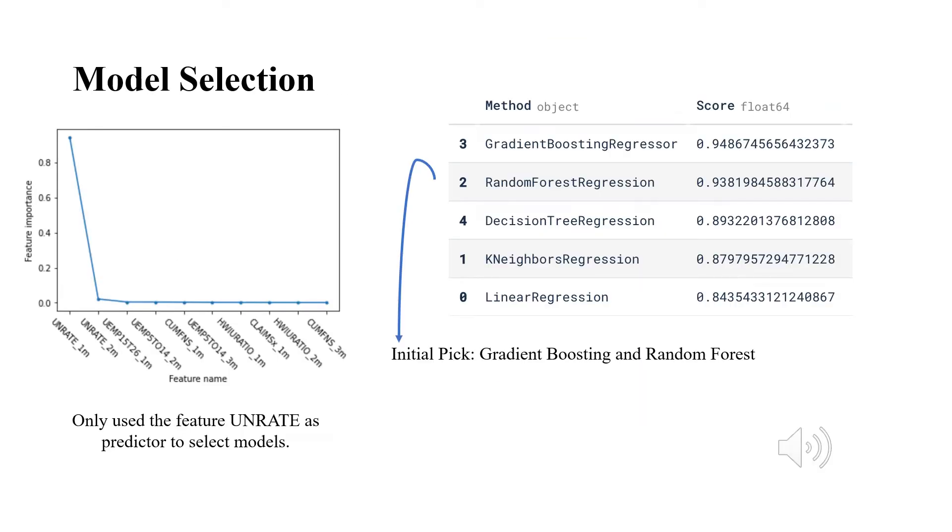Before I start to construct the machine learning models for our project, I did a model selection based on those models that we have learned from this course. For the model selection, I only used one feature, the unemployment rate as predictor, because from the plot on the left side, we can see the feature importance of the unemployment rate is more than 95%, which is quite high. Based on the results I got from the model selection, I initially picked the random forest algorithm and the gradient-boosting algorithm.